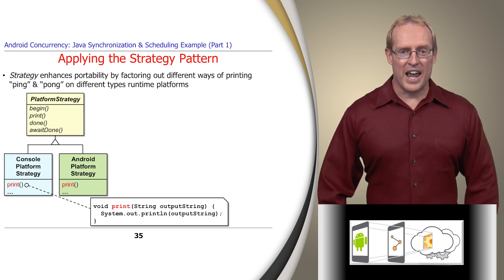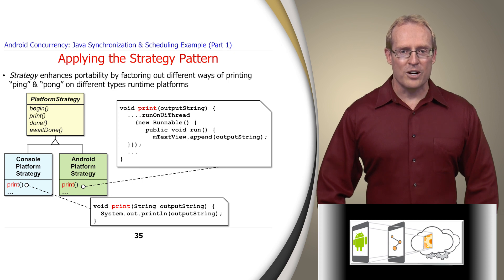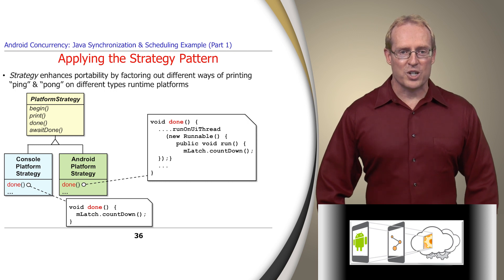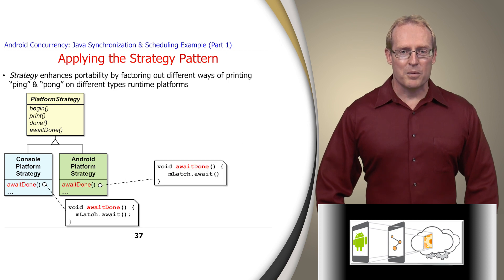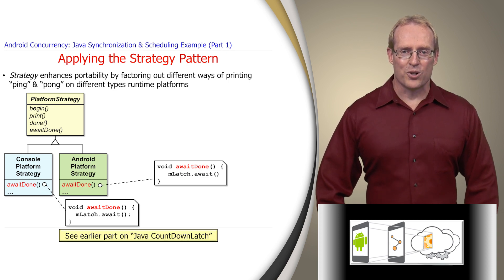In contrast, the Android platform strategy print method creates a runnable whose run hook method writes a string to a text view, and then queues this runnable on the user interface thread's looper queue, since Android only allows the user interface thread to write to the display. Likewise, the platform strategy done method is implemented differently in an Android application versus a console application, though the countdown latch countdown method is used on both platforms. The await done method implementation is the same on both platforms, simply forwarding to the countdown latch await method to perform barrier synchronization.